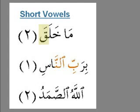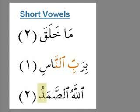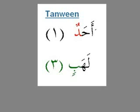The second example with the kasra would be read as 'bi rabbin nas' — the seen carrying the kasra is read as if it's sakin. The last example is 'allahussamad' — the dal carrying the dhamma becomes sakin, and because it's one of the qalqala letters it's read with an echo.